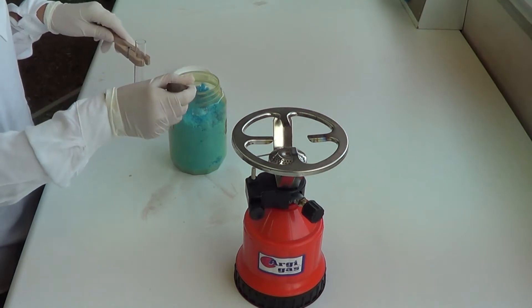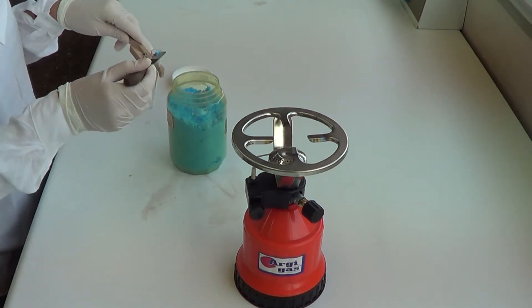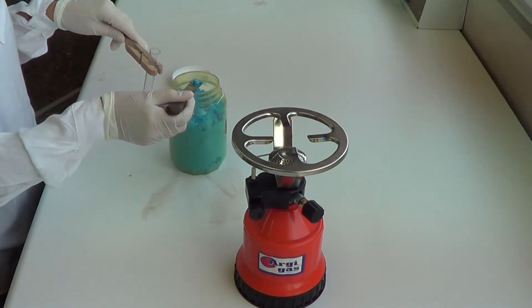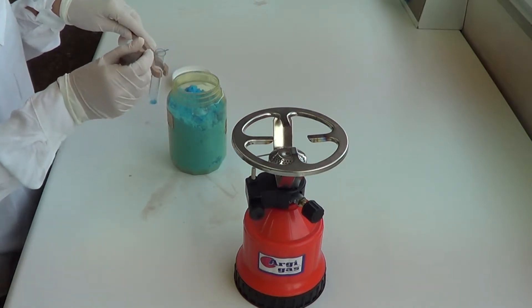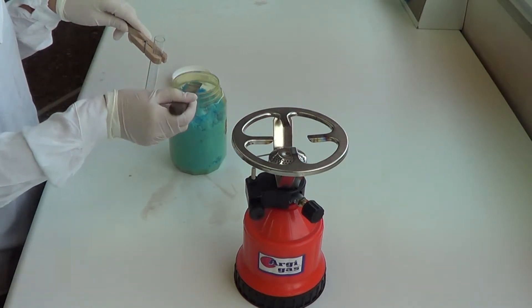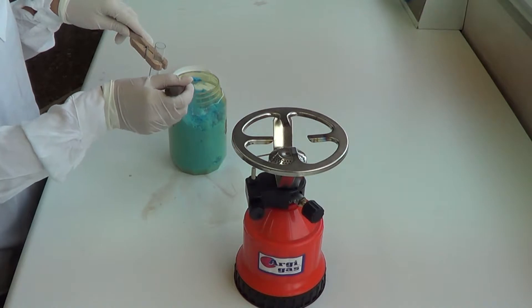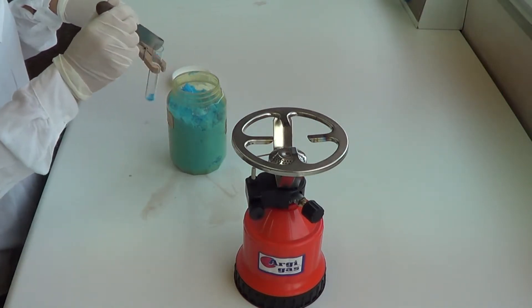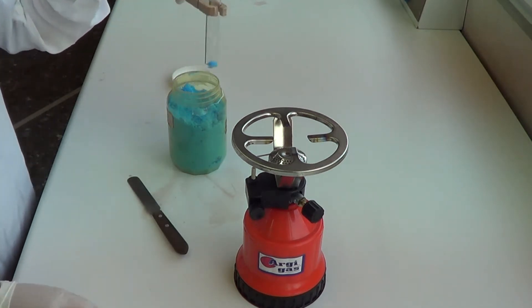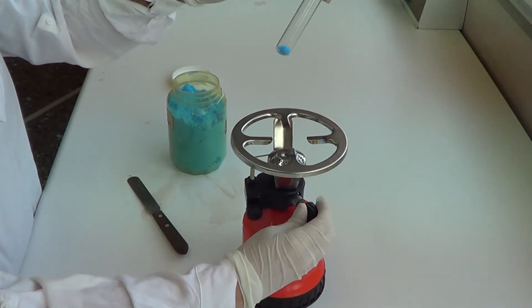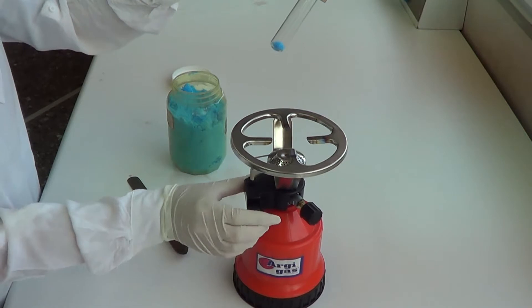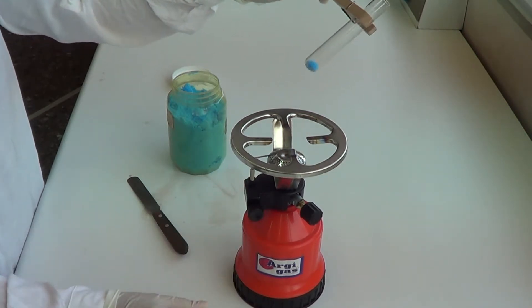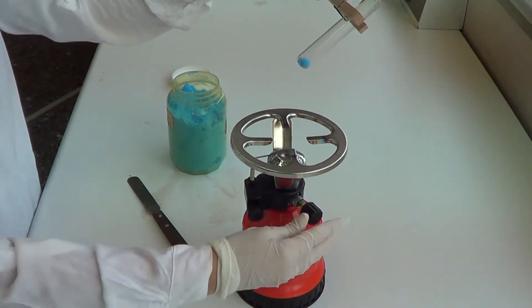In a glass test tube, we place about 10 grams of hydrated copper sulfate. Then we approach the test tube to a lit flame, taking care not to turn the test tube toward us or any other person.